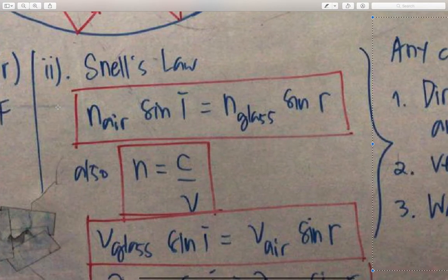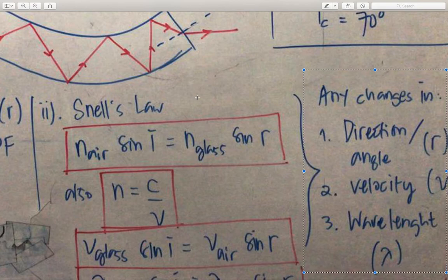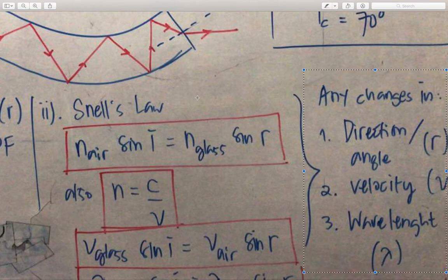From Snell's law, n sin i equals n sin r. N equals c over v. N as the refractive index, c as the speed of light, constant number 3 times 10 power 8 meters per second, and v is velocity of ray in that medium.